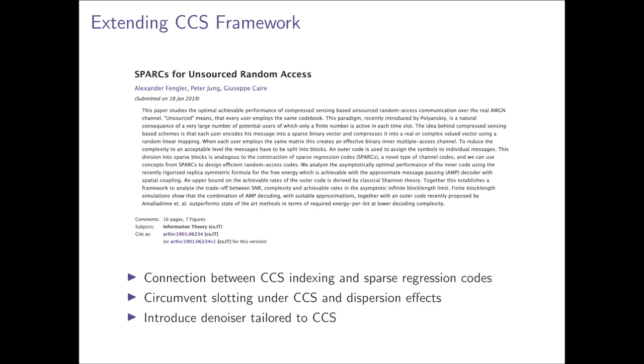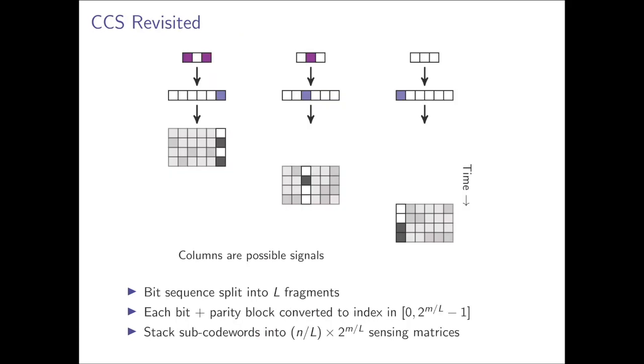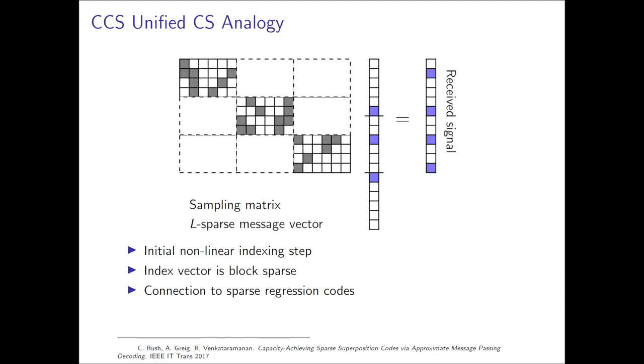The final idea we explore was proposed by Fengler, Jung, and Kyrie, and it draws a connection between coded compressed sensing and sparse regression codes. To explain the idea, we revisit the coded compressed sensing framework that we've devised. Here we think of every slot as being disjoint, and formation messages are partitioned into blocks, which leads to index vector, and it produces signals that are aggregated within a slot.